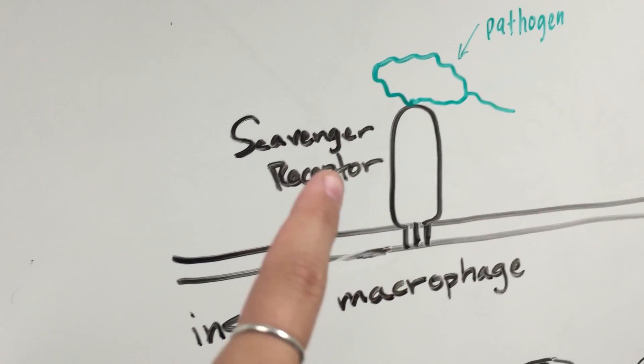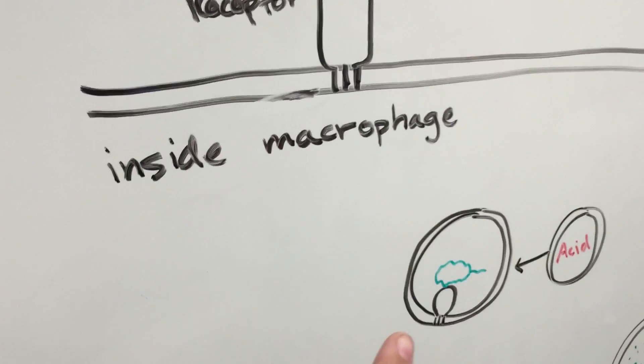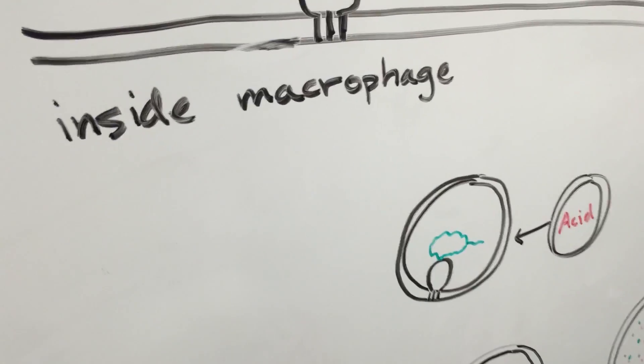This triggers the macrophage to bring the receptor and the pathogen into the macrophage, creating a little pocket called a phagosome.